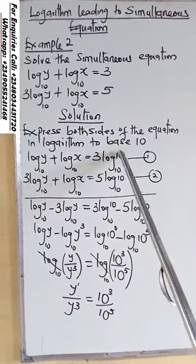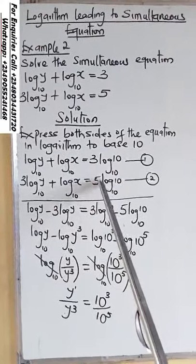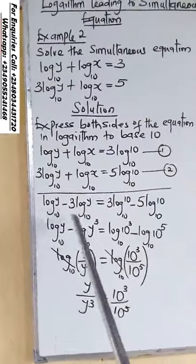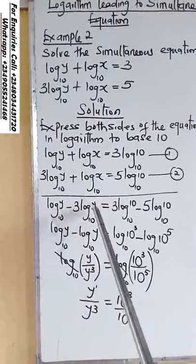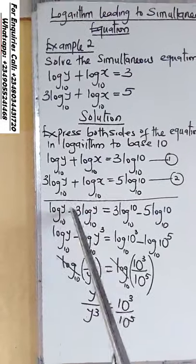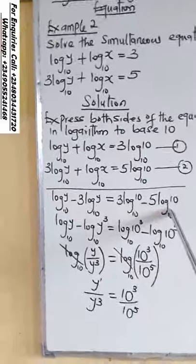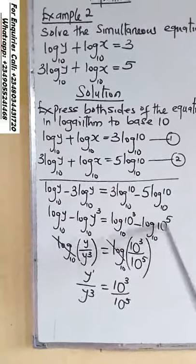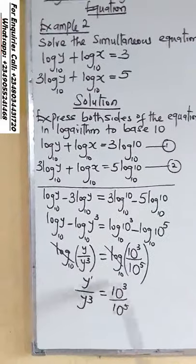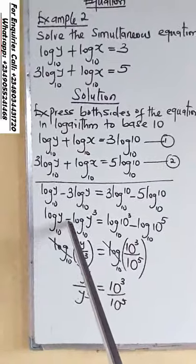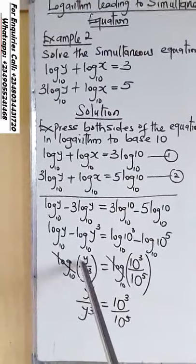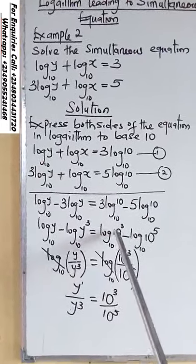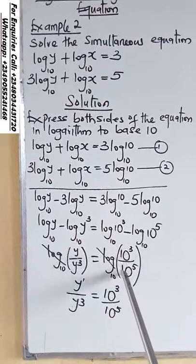Then 3 log 10 base 10 minus 5 log 10 base 10. Following the laws of logarithm, the coefficient at the front will move as a power. Minus becomes division, giving us y divided by y raised to the power 3, equals 10 raised to the power 3 divided by 10 raised to the power 5.